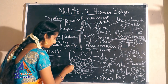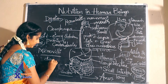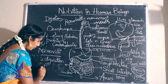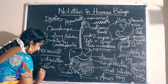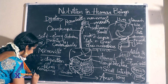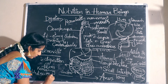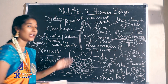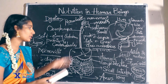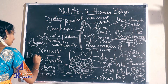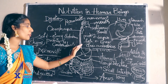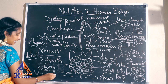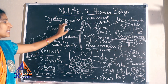In the large intestine, further digestion takes place and the food materials are converted into fibers. The remaining undigested carbohydrates, proteins, and other substances pass from the large intestine through the anus and out of the body. The process of passage of undigested food materials out of the body through the anus is called defecation. The undigested food contains remaining fibers and other unabsorbed materials.